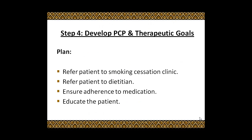Step four is development of the pharmaceutical care plan and therapeutic goals. The plan for this patient: first, refer the patient to a smoking cessation clinic; second, refer the patient to a dietitian; third, ensure adherence to medication — educate the patient about the importance of compliance to treatment, the medication refill pattern, and the importance of regular follow-up of blood pressure measurements. The last part of the plan is patient education.